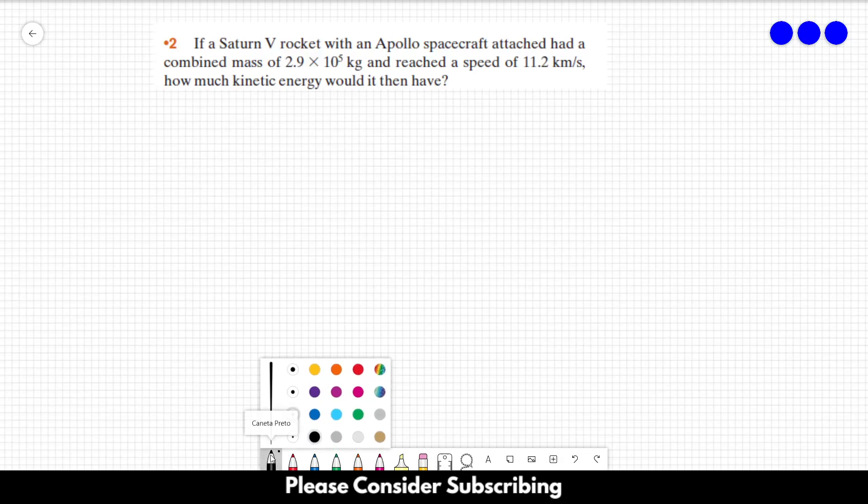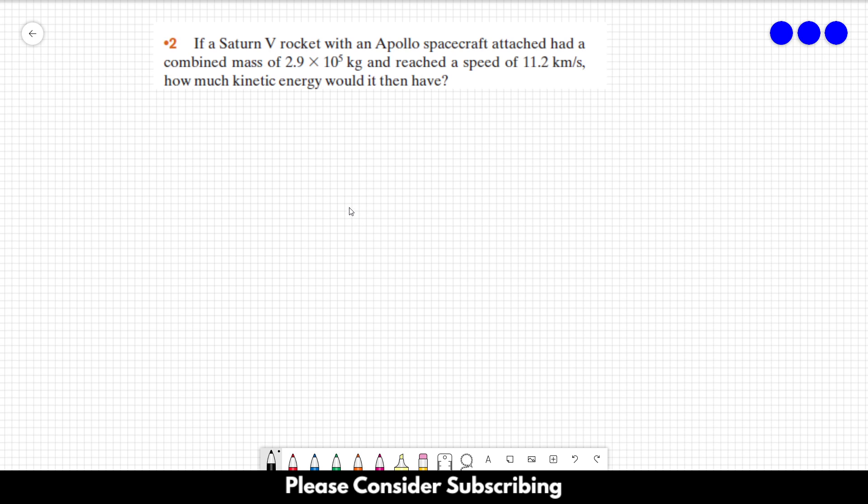Number two, if a Saturn V rocket with an Apollo spacecraft attached had a combined mass of 2.9 times 10 to the fifth kilograms and reached the speed of 11.2 kilometers per second, how much kinetic energy would it then have?